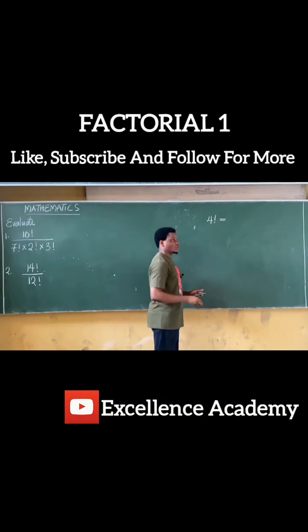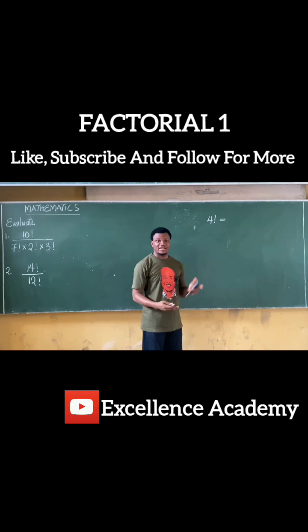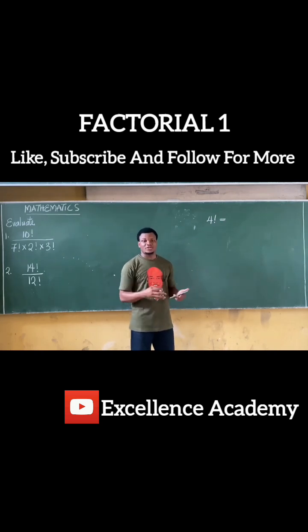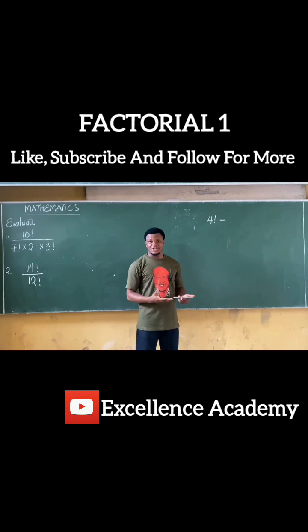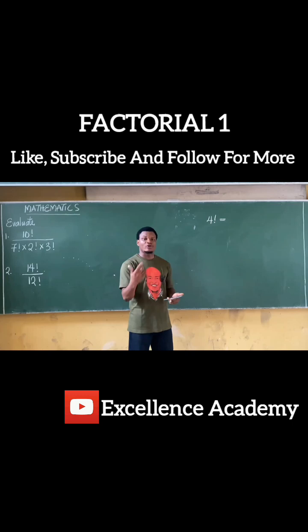4 factorial is simply equal to, we said, it is the multiplication. So I'm doing multiplication, that's number 1. Number 2 is a set of consecutive positive integers. An integer is simply a positive or a negative whole number. So I'm multiplying positive whole numbers in descending order.